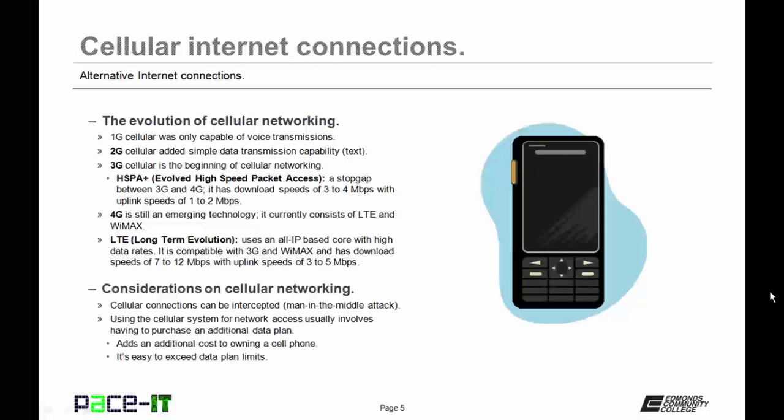Some things you need to consider about cellular networking: first, cellular connections can be intercepted — they are susceptible to a man-in-the-middle attack. That's because you're transmitting and receiving from cell towers to your cell phone, and anybody with the proper equipment can intercept those packets. They may not be able to read them, but they can be intercepted. Also, using the cellular system for internet access usually involves having to purchase an additional data plan, which adds cost to owning a cell phone. Be aware that it can be easy to exceed data plan limits, therefore costing you even more money.